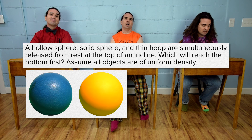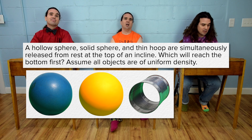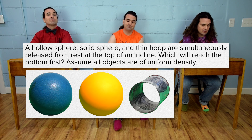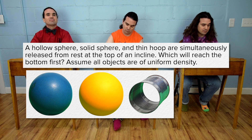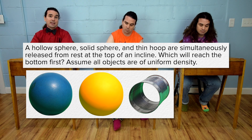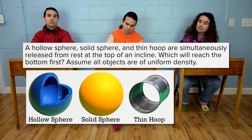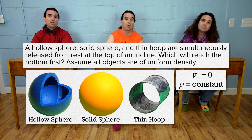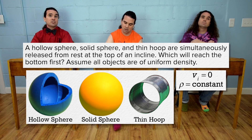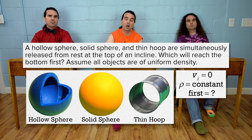A hollow sphere, solid sphere, and thin hoop are simultaneously released from rest at the top of an incline. Which will reach the bottom first? Assume all objects are of uniform density. There are three objects: a hollow sphere, a solid sphere, and a thin hoop. Their initial velocities all equal zero, each object has a constant density, and we are trying to determine which one reaches the bottom of the incline first.